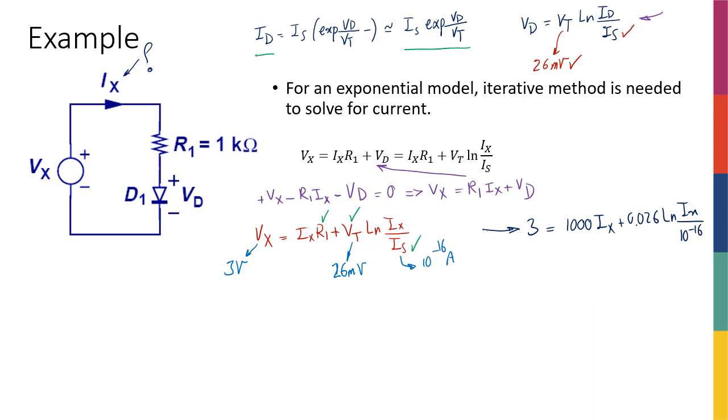It kind of motivates us to actually have a simpler model, and we're going to introduce those simpler models in the next slides. But just for your curiosity, if you actually have done the math, you should get for vx equal to three volts you should get somewhere an ix somewhere close to 2.2 milliamps. For one volt I think you get somewhere around 0.2 milliamps.